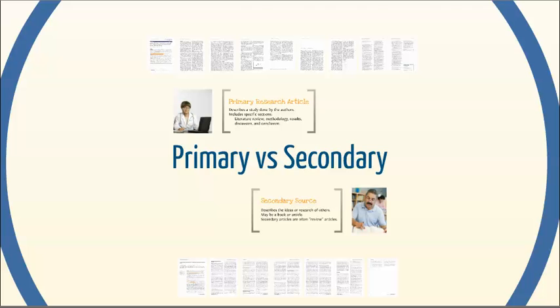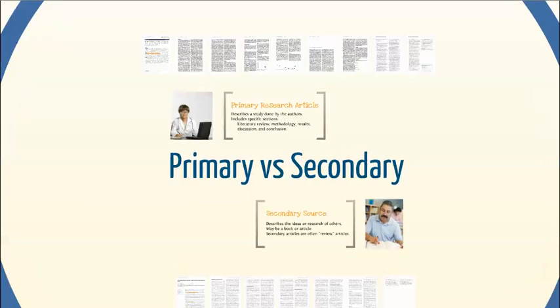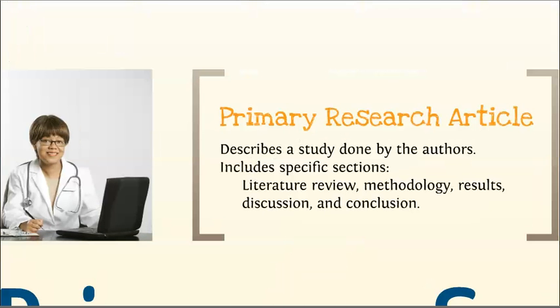Most of the items in the Walden Library can be categorized as either primary or secondary sources. The most common type of resource you will need to find in the Walden Library is the primary research article.